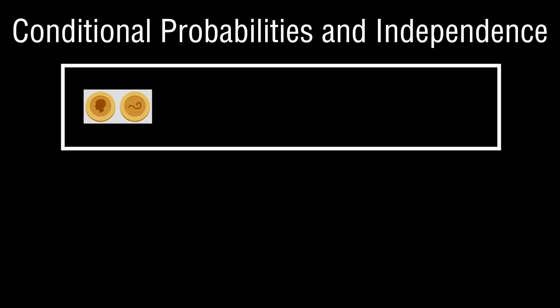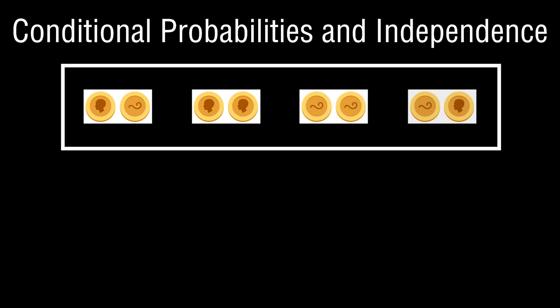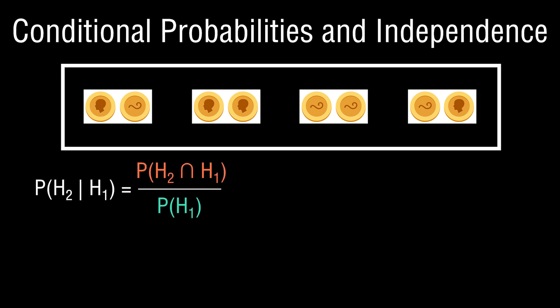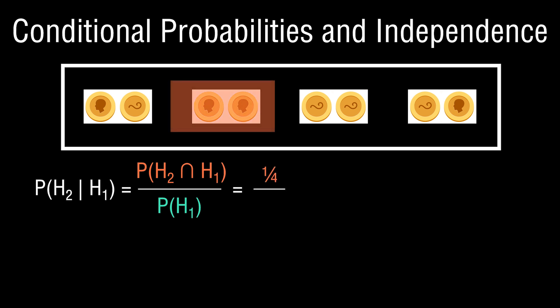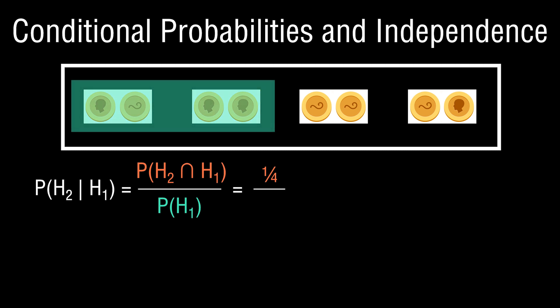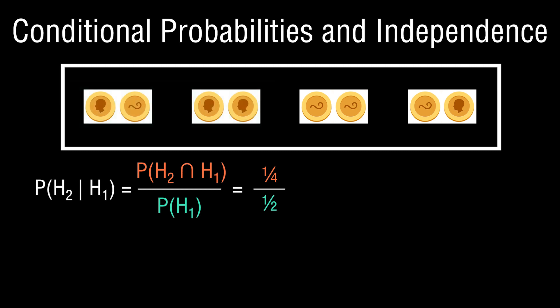Now let's go through the example of flipping a coin twice. The possible outcomes are heads-tails, heads-heads, tails-tails, and tails-heads — these four outcomes define the sample space. What is the conditional probability of getting heads on the second toss, given that heads occurred the first time? Intuitively, you'd expect it to remain one-half. If each outcome has a one-in-four probability, the numerator — joint occurrence of heads on both tosses — is one-fourth. The probability of heads on the first toss involves two outcomes, each at one-quarter, summing to one-half. This highlights the idea of statistical independence.